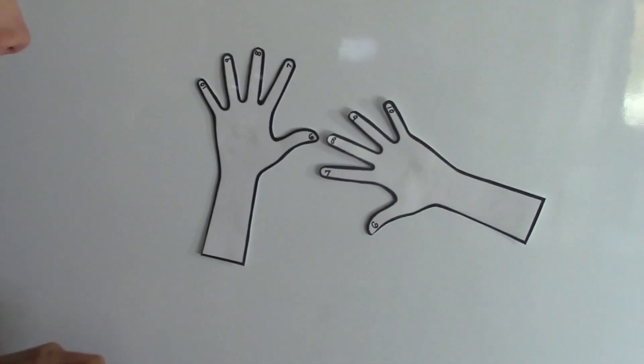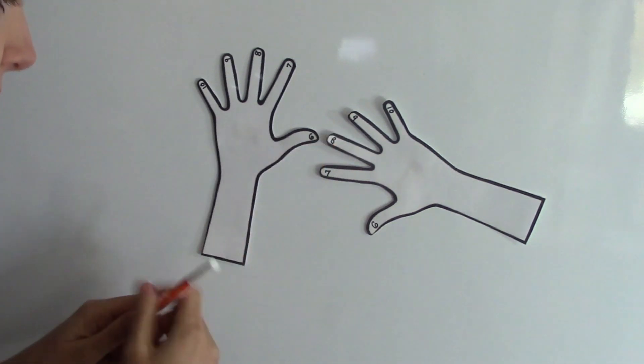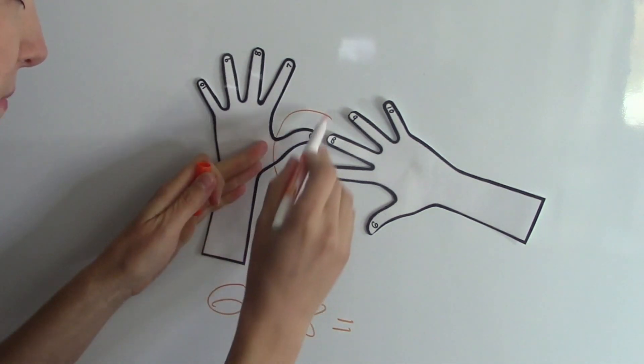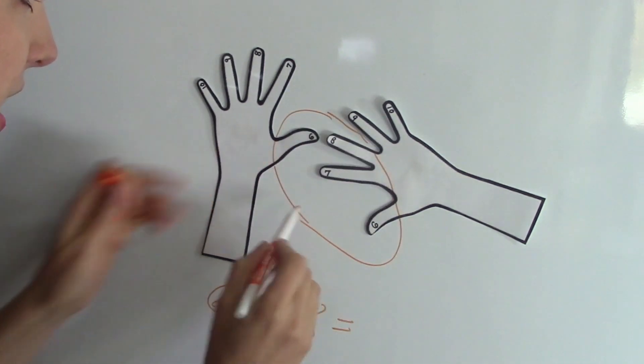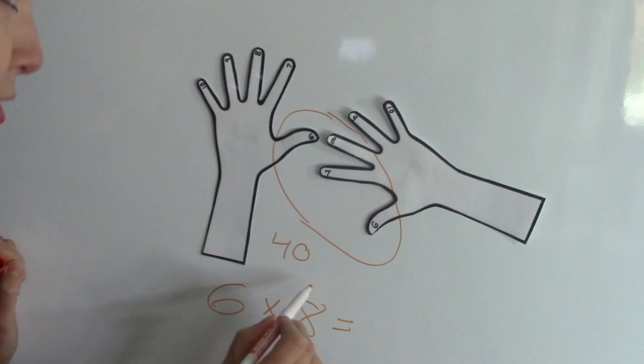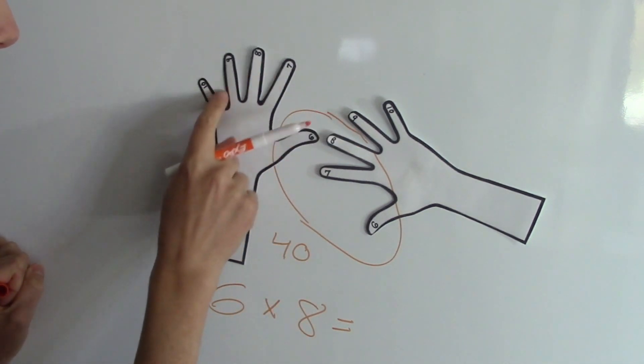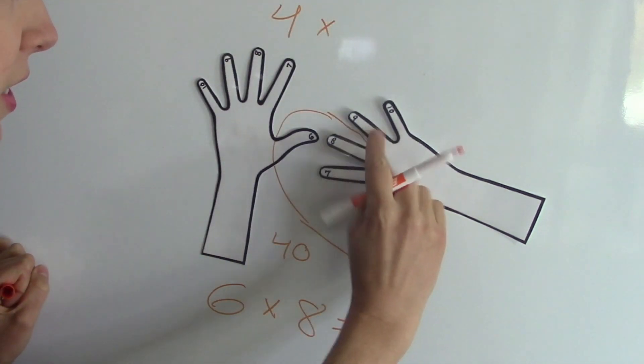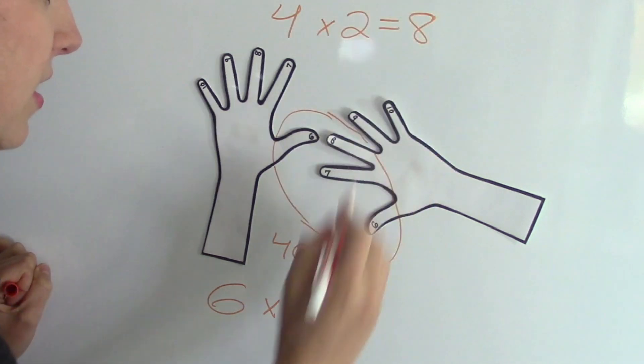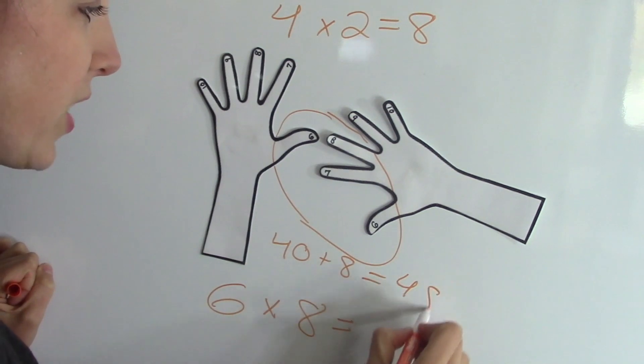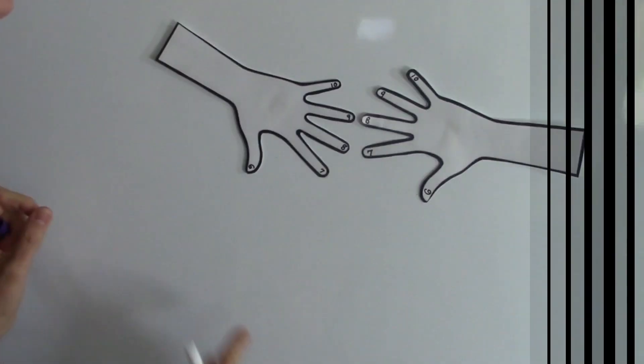Okay. This time we're going to go 6 times 8. 6 times 8 equals, I have my 6 and my 8. And I have 1, 2, 3, 4. So 4, which turns it into 40. And then I have 4 above my 6 over here times 2 over here, which equals 8. So 40 plus 8 equals 48. So I know that 6 times 8 is equal to 48.